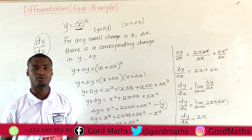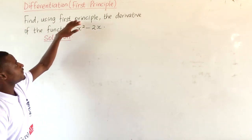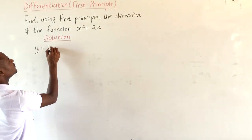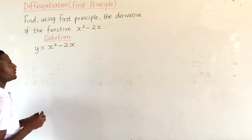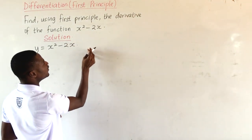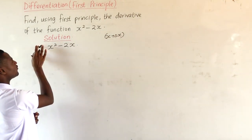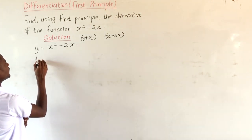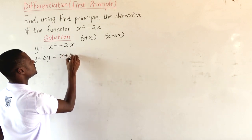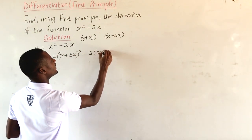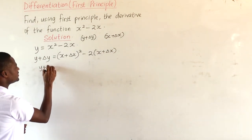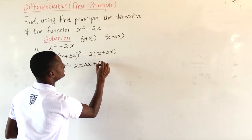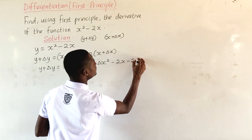We will take another example. Let's find, using first principle, the derivative of the function x squared minus 2x. So, we will let y equal to x squared minus 2x. Then, with the basic principle of differentiation, when x increases by a small amount to become x plus delta x, it will lead to a corresponding increase in y, making y become y plus delta y. So we will have y plus change in y equal to x plus delta x, all squared, minus 2 times x plus delta x. Expanding, we get x squared plus 2x delta x plus delta x squared minus 2x minus 2 delta x.